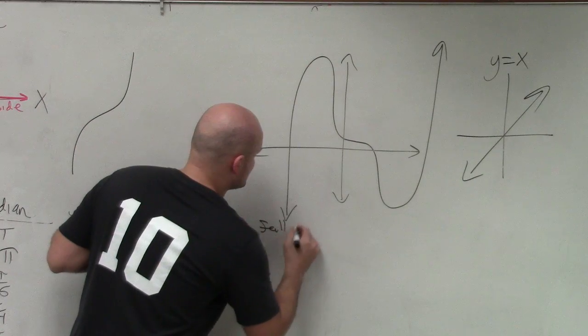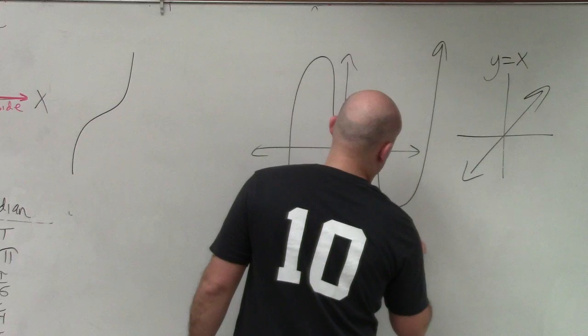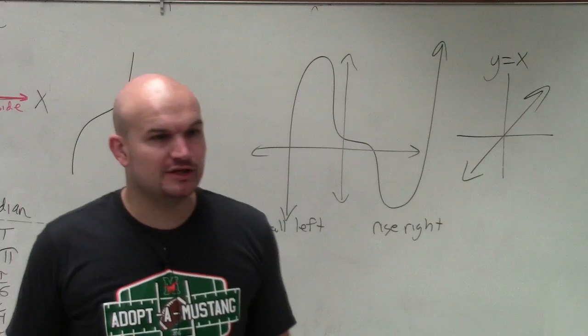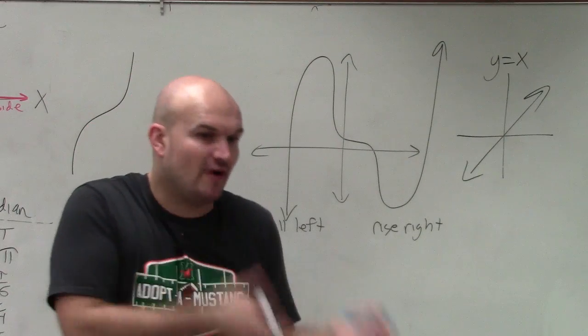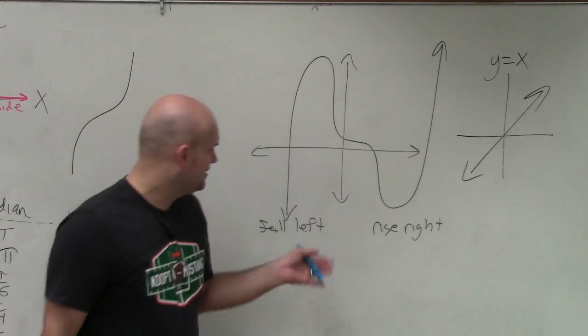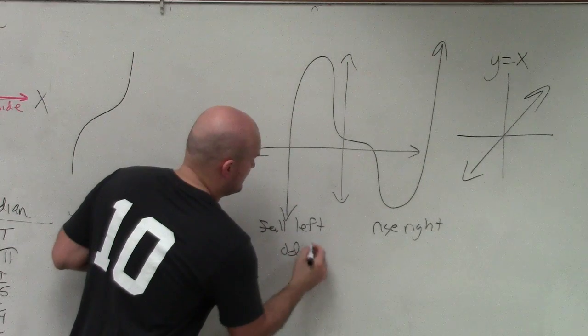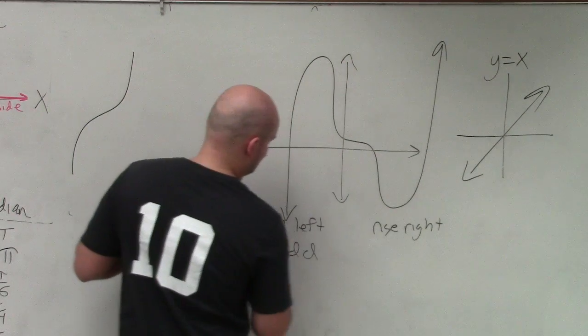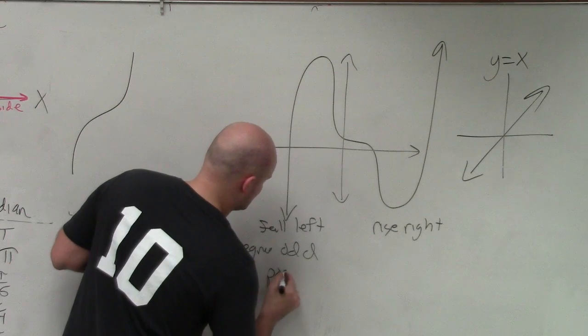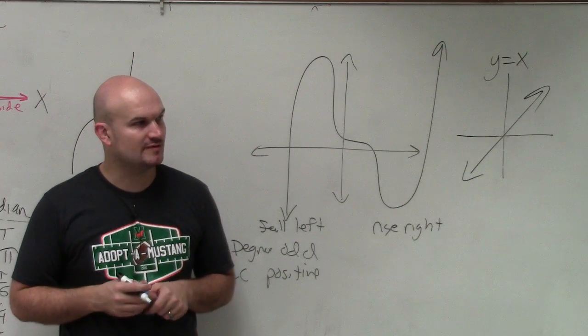So what we need to do is go back and look at your notes, and determine what was the leading coefficient and the degree when you had a graph that fell left and rose right. The degree is odd, and the leading coefficient is positive. Does everybody see what you're supposed to do for that?